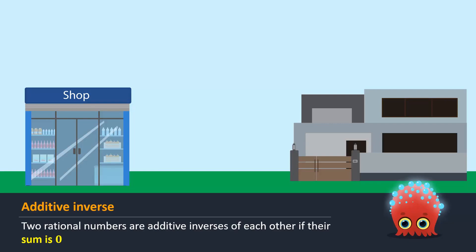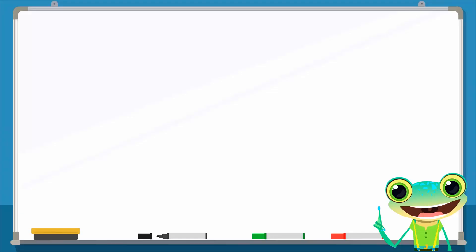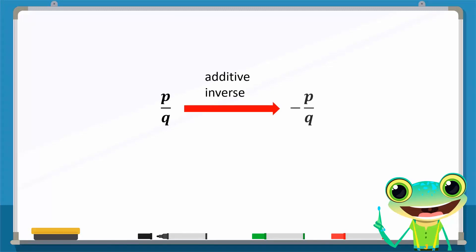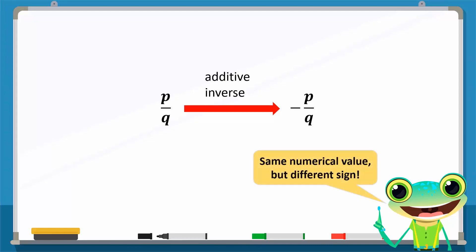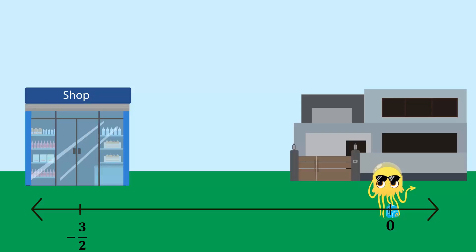Generally, the additive inverse of a rational number p over q is minus p over q. To put it simply, an additive inverse of a number has the same numerical value but a different sign.